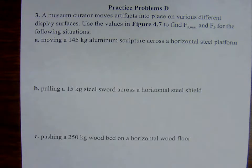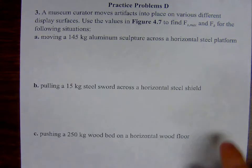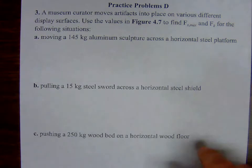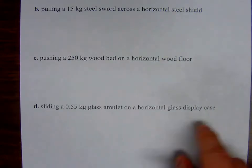Figure 4.7 is a table, and it's full of coefficients of static friction and coefficients of kinetic friction for various substances that are going to be referred to in these problems. So it's, you know, steel platform, steel shield, wood floor, glass display.